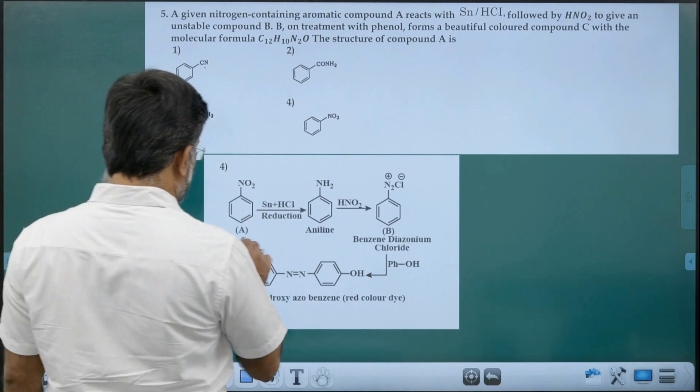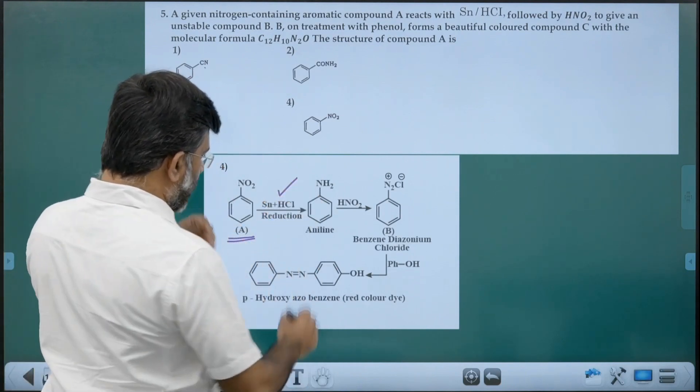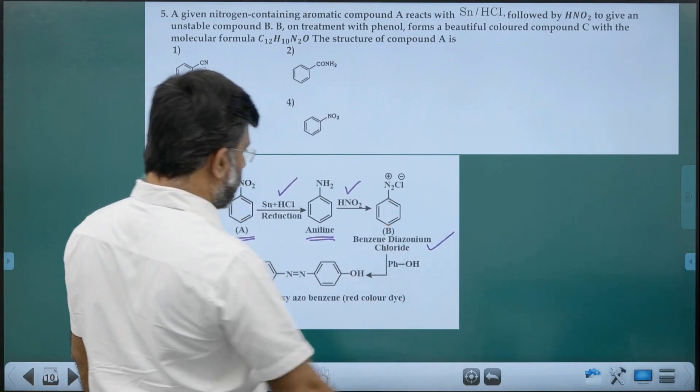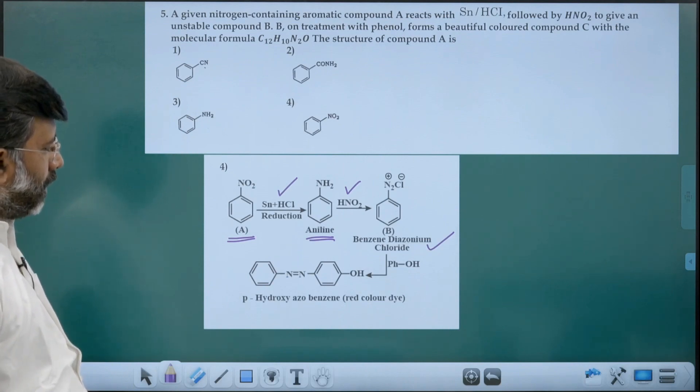This is compound A, nitrobenzene. Reduction with tin and HCl gives aniline. Aniline with nitrous acid gives benzene diazonium chloride, which is unstable but can be stabilized at low temperature.